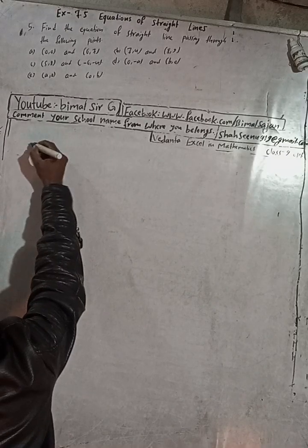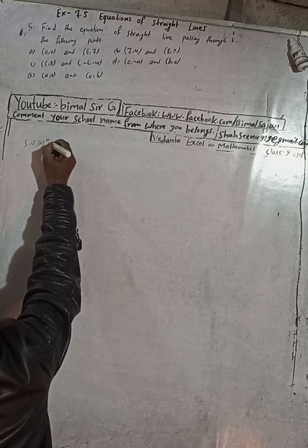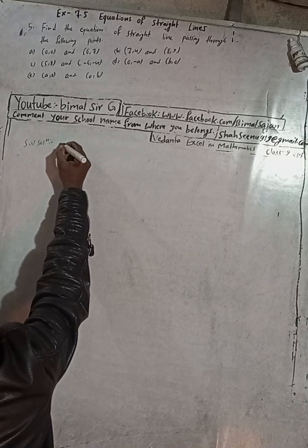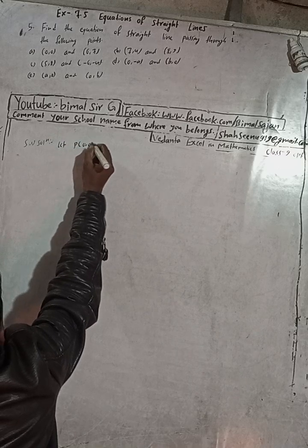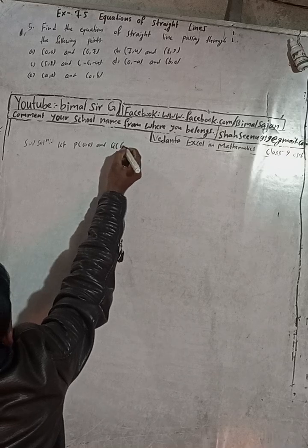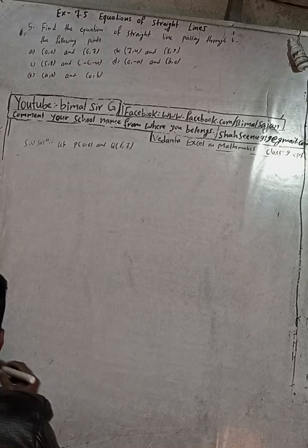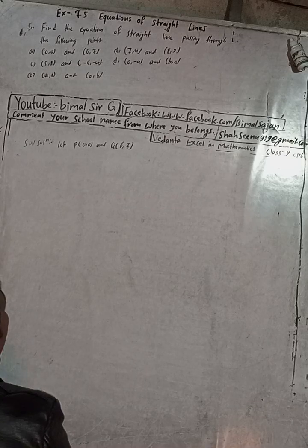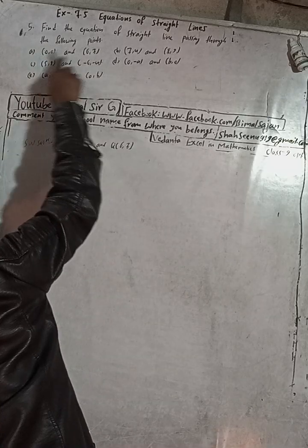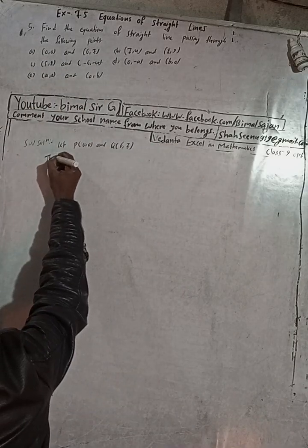Here is question 5a solution. Let P be (0, 0) and Q be (6, 7). So point P is (0, 0) and Q is (6, 7). Now we have to find the equation of the line.